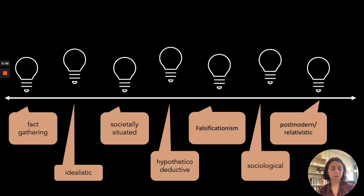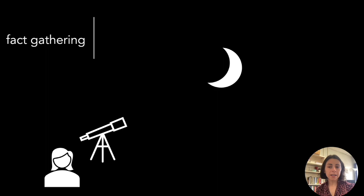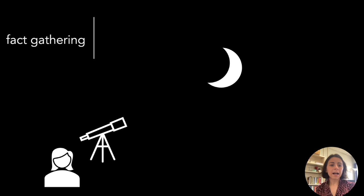Let's start with the fact-gathering view of science. The idea is that you gather facts about the natural world and then form theories based on those facts. Suppose you're an astronomer looking out at the moon with your telescope — you note down observations about its brightness, trajectory, or whether it's waxing or waning. Your book calls this the Whig History, a simplified conception of how science works.